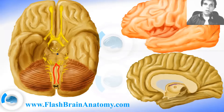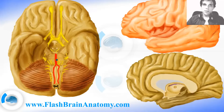The basilar artery goes in this sulcus, called the basilar sulcus on the pons. This is the basilar artery. Now, before they joined, the vertebral arteries gave two branches.